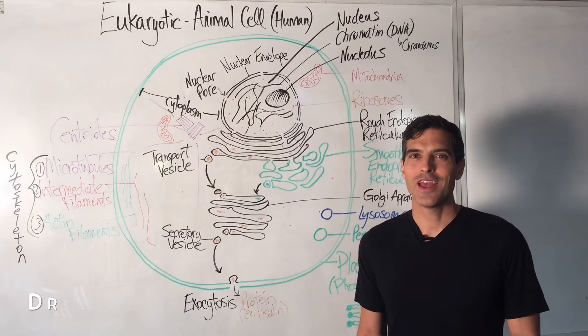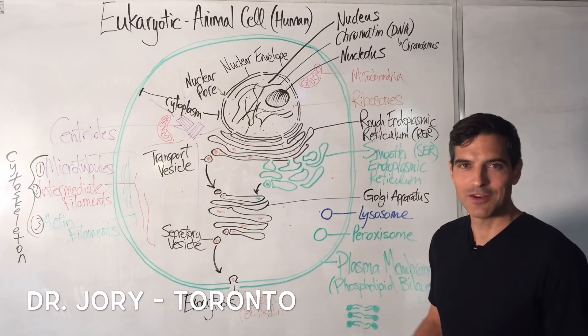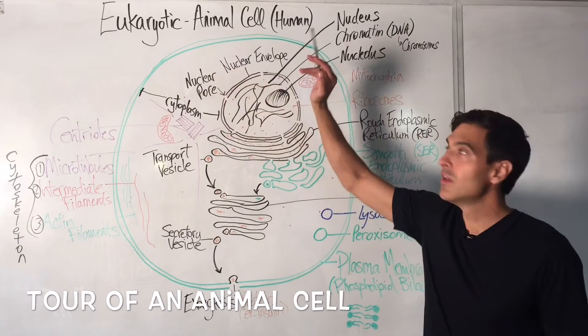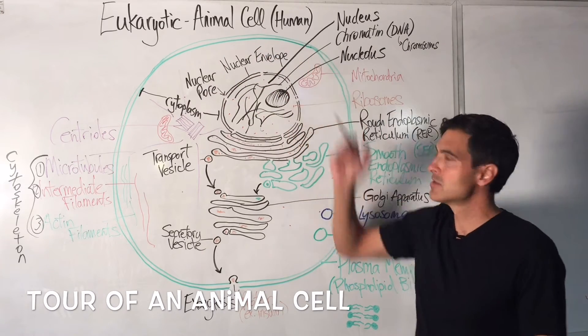Hey, it's Dr. Jory and welcome to a tour of the animal cell. This is a typical eukaryotic cell, animal cell, and we'll just say it's a human cell.